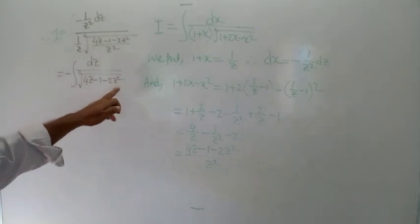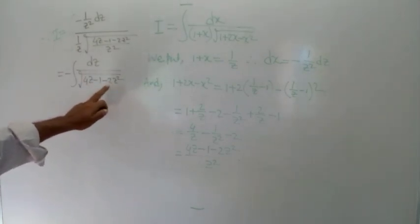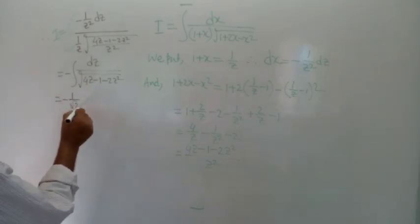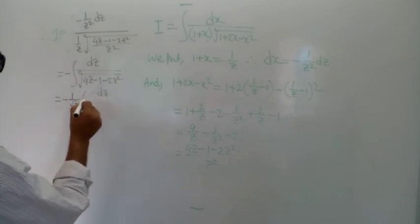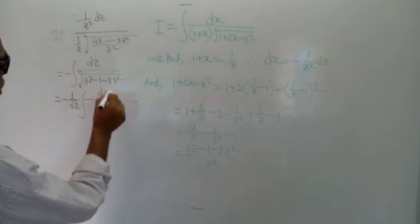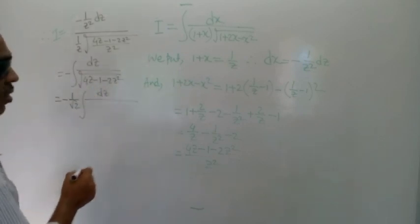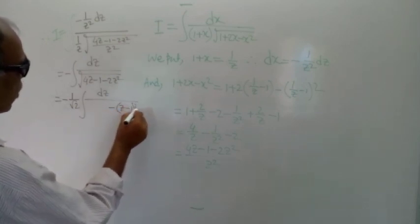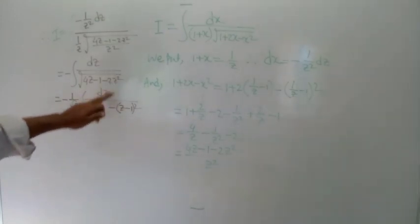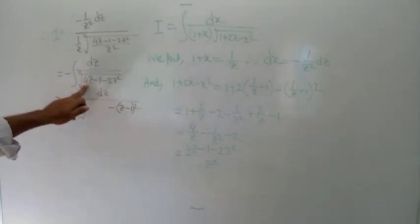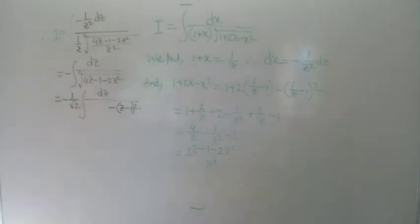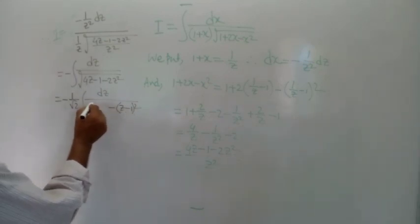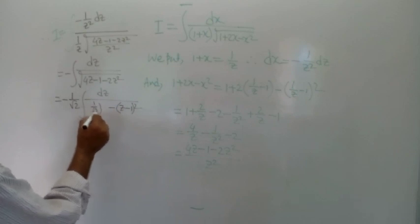Now the coefficient of z squared is 2, so we take 2 outside the square root sign. Therefore we get minus 1 by root 2, and inside the root we complete the square: we write z minus 1 whole squared, giving minus z squared plus 2z minus 1, with minus half and 1 by root 2 whole squared under the root sign.